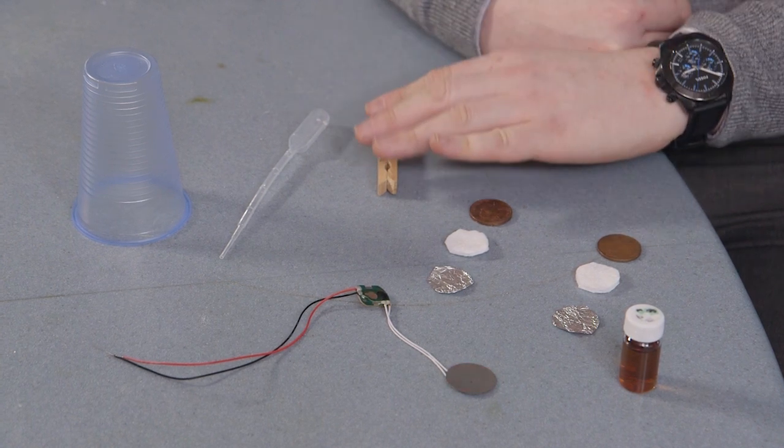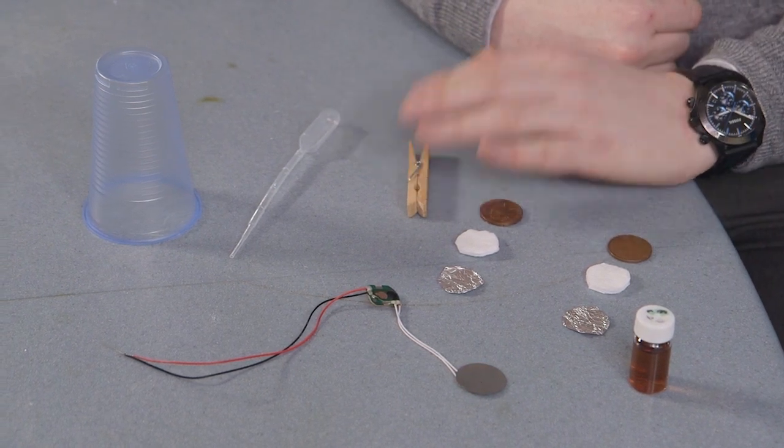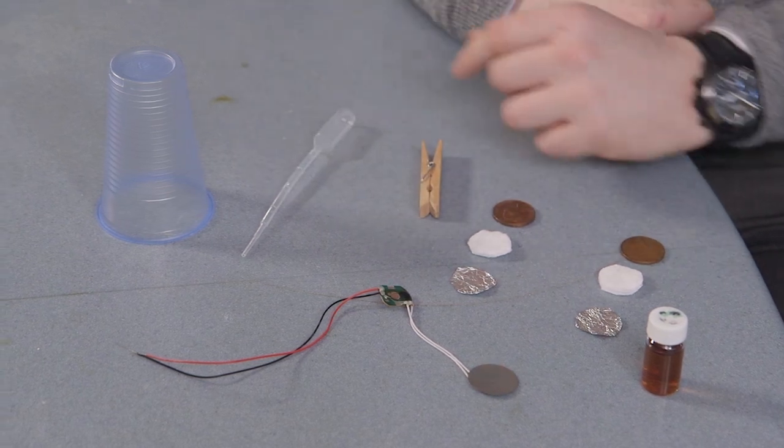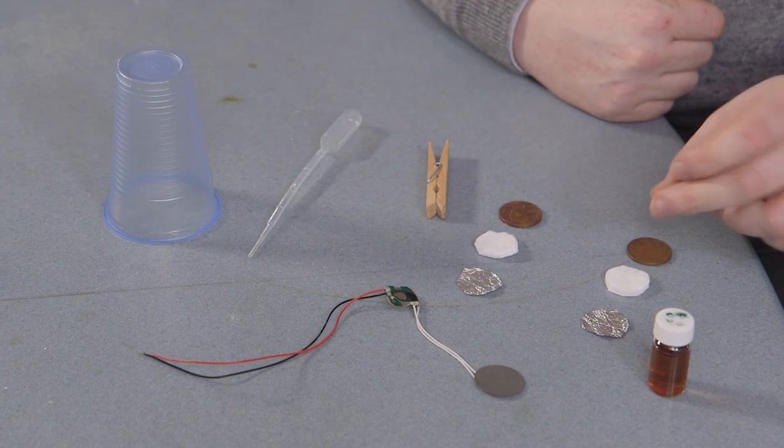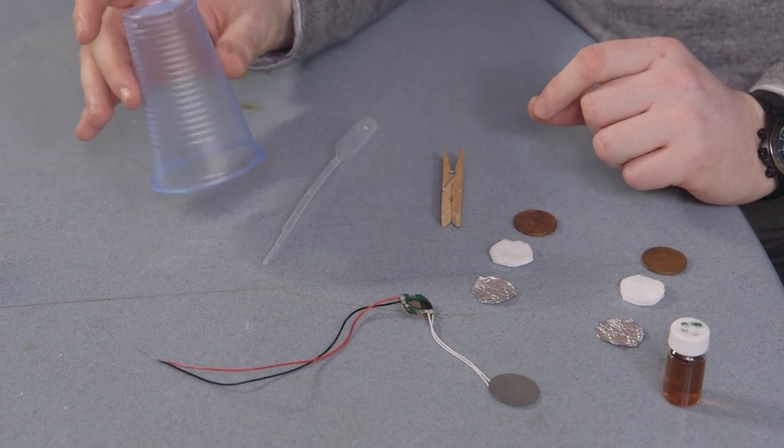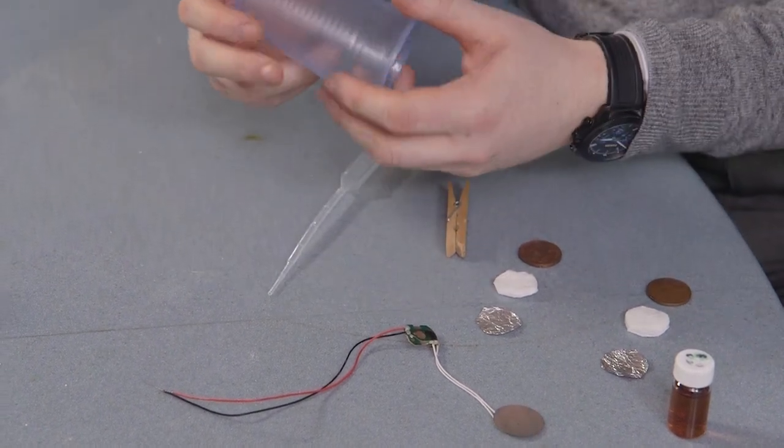We have a clothes peg, can be plastic, doesn't have to be wooden. A pipette, but you can just pour the vinegar on if you need to. A plastic cup, needs to be one of these plastic disposable cups.